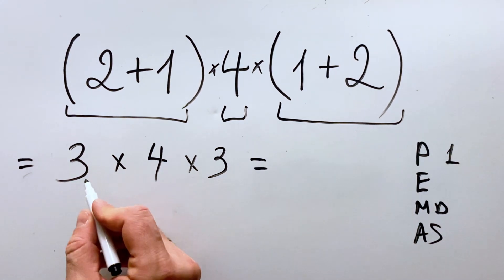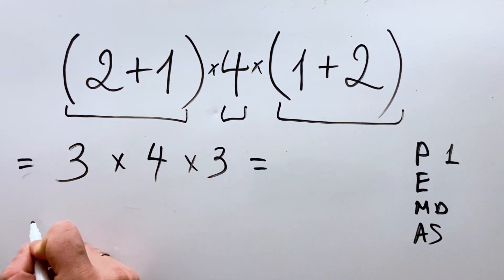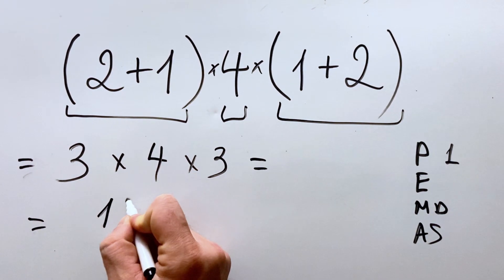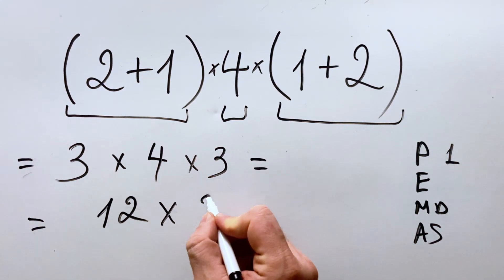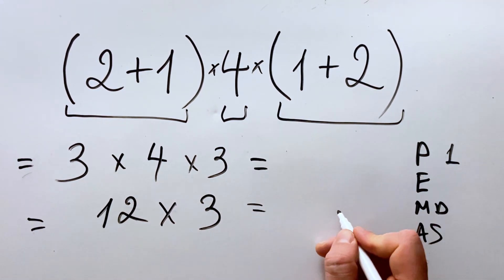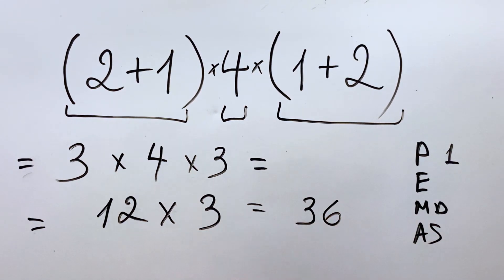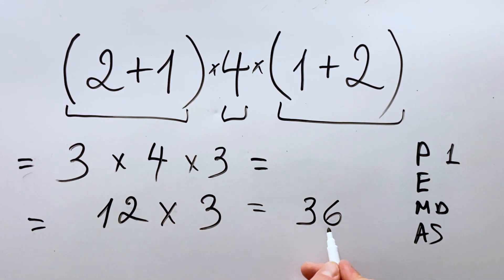So what do we get? We have 3 multiplied by 4 is 12, multiplied by 3, and the result is 36.